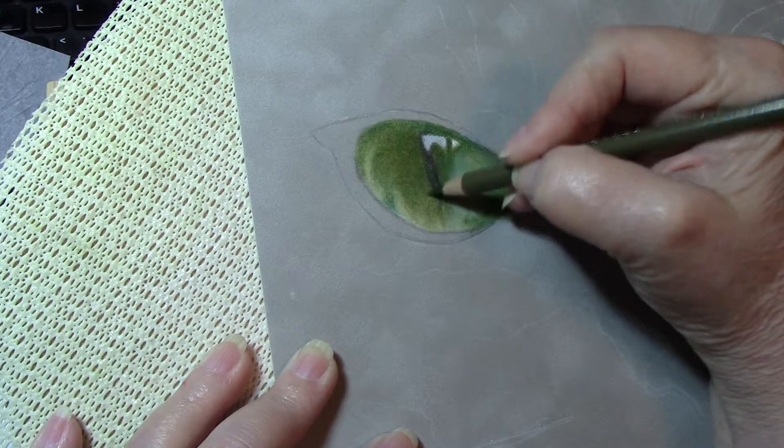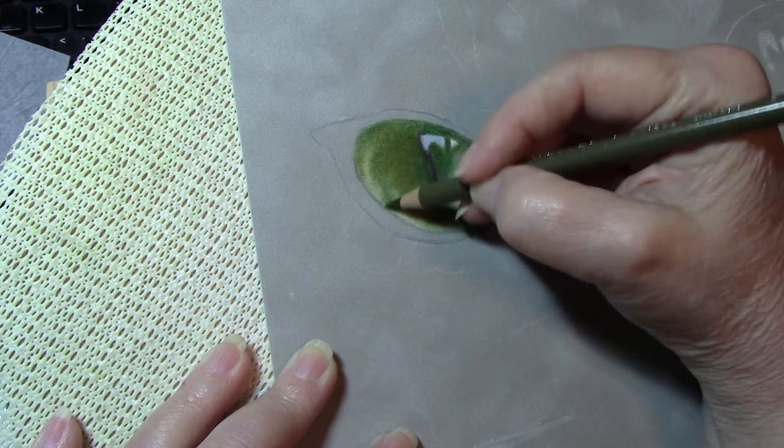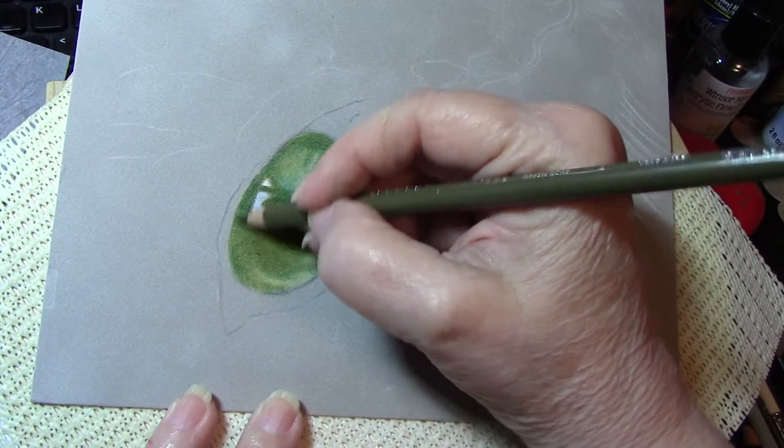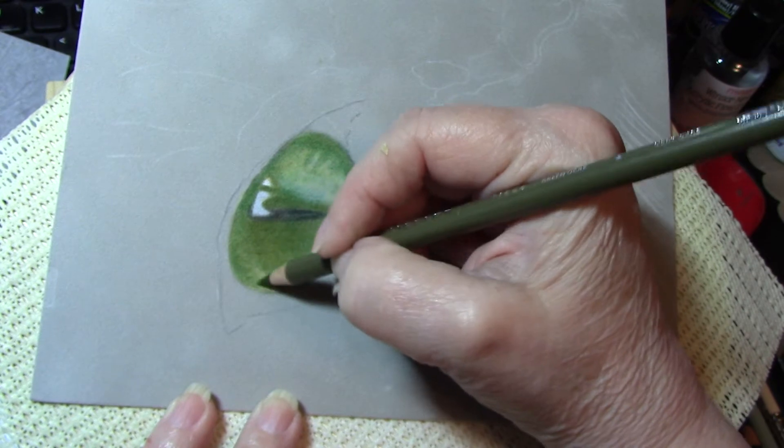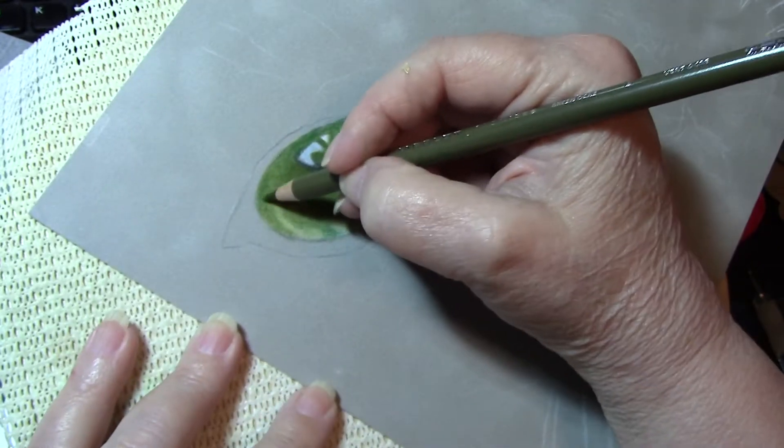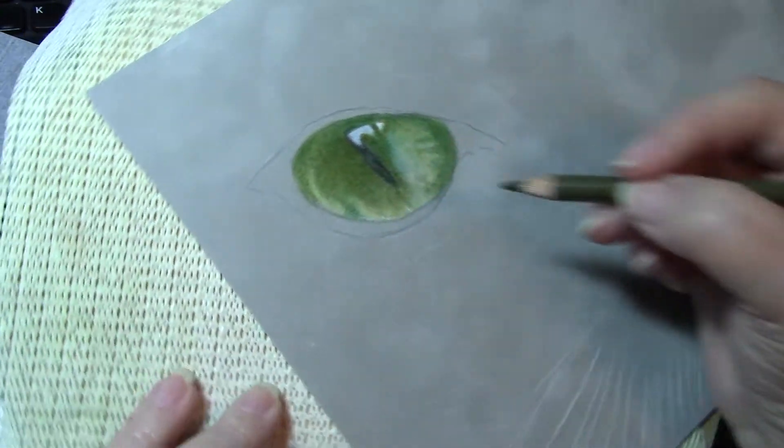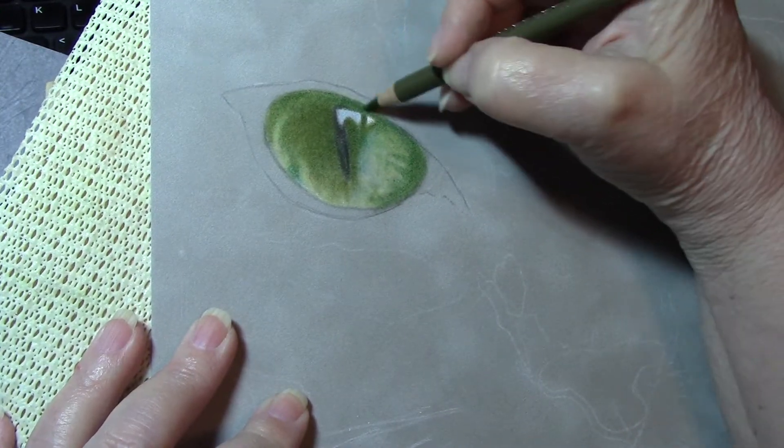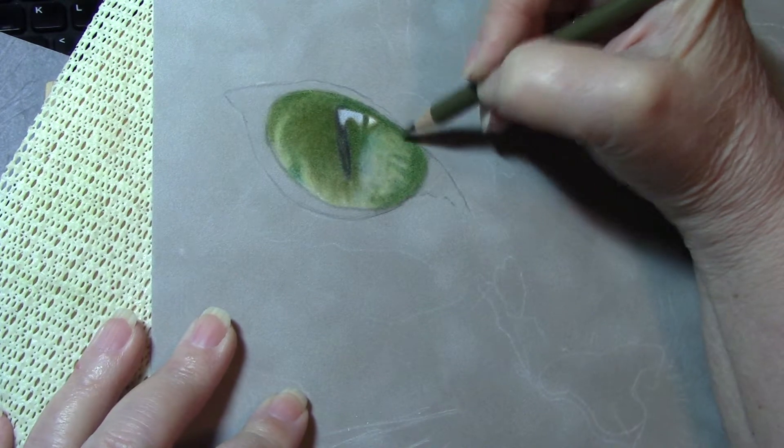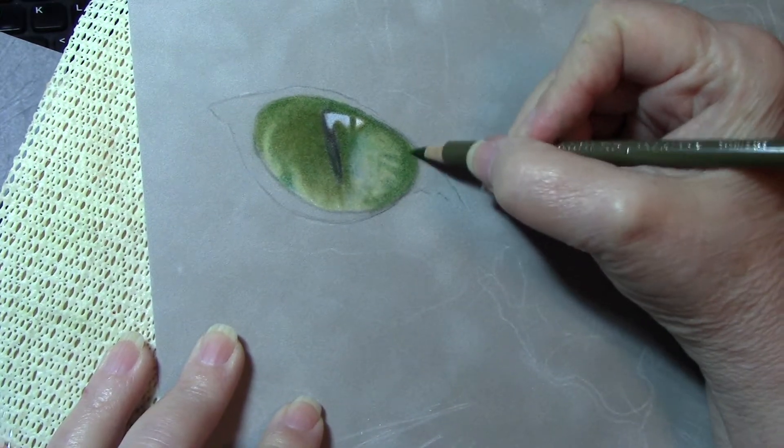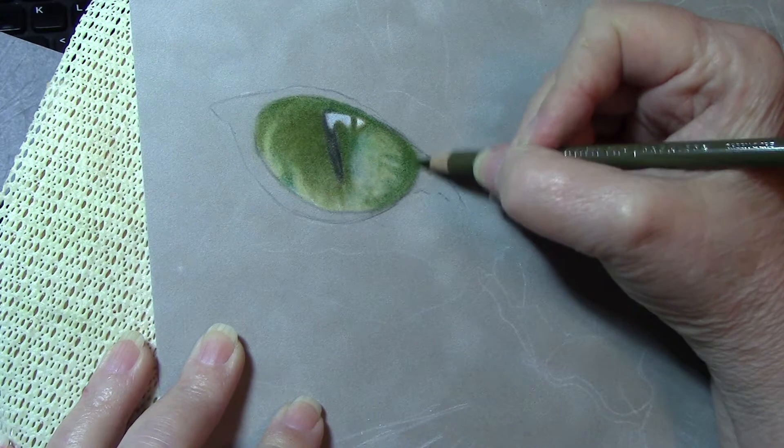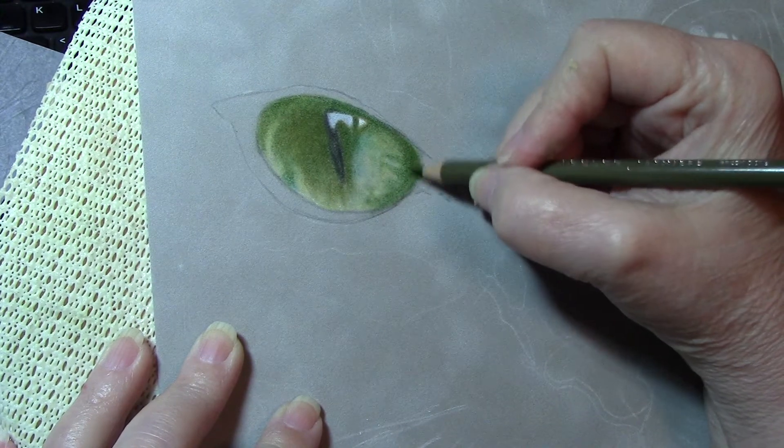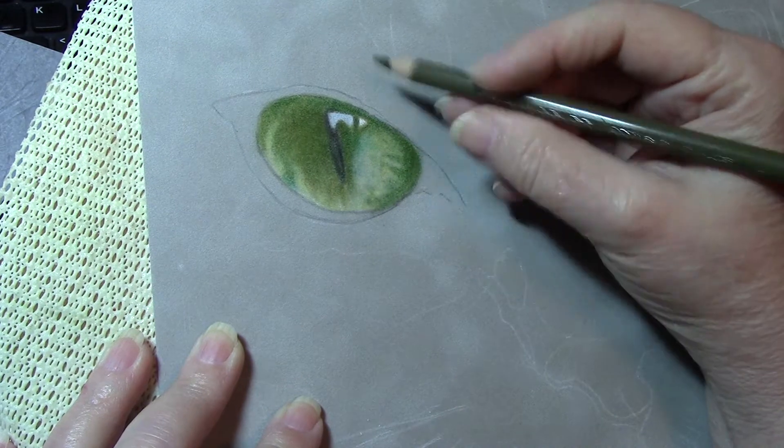Going over it several times, building layers. I keep turning my pencil so I can keep a sharp edge. Every time I pick it up, I twist it.